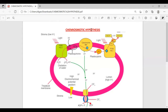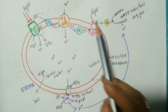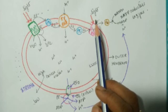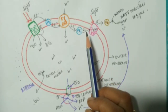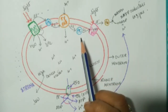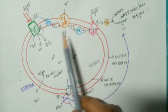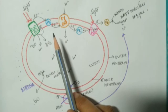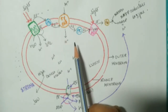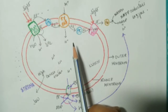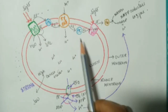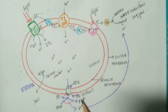So first let me explain what is chemiosmotic hypothesis in a simple way. Here is the diagram of chemiosmotic hypothesis. This is the hypothesis which helps us to understand the process of ATP synthesis in chloroplast. We know that ATP is synthesized both in chloroplast and mitochondria, and this hypothesis helps us to understand how ATP is formed.